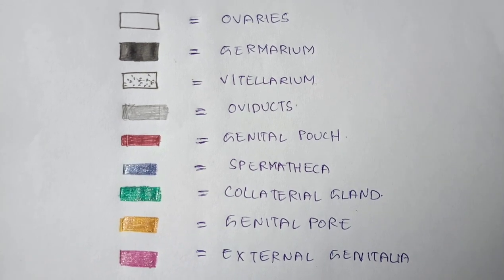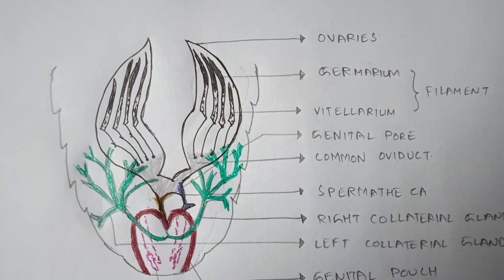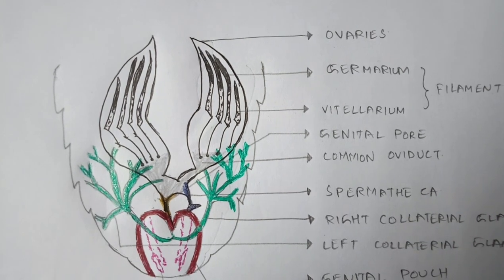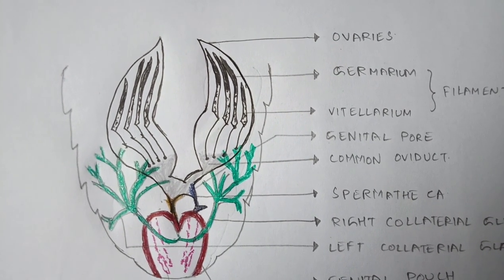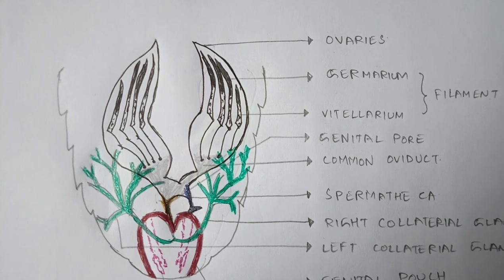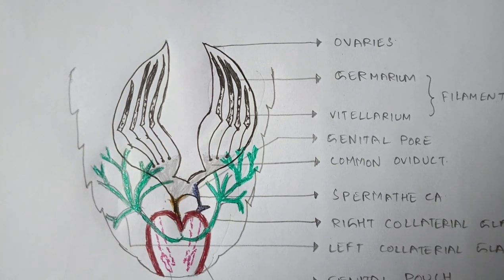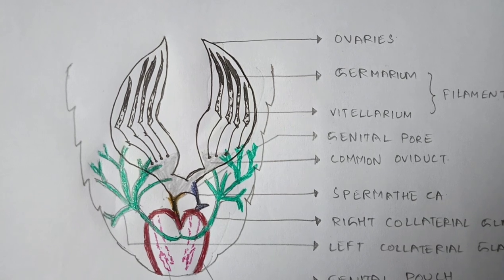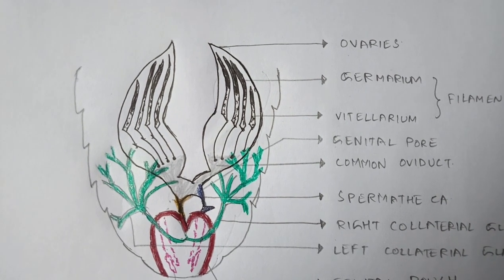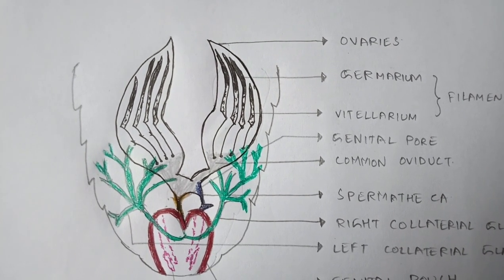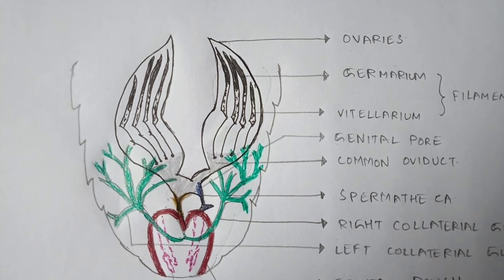First, the ovaries — represented by the black border line. There are a pair of ovaries present in the reproductive system. These ovaries are present at the second to sixth abdominal segments. Cockroach consists of thoracic segments and abdominal segments, and this reproductive system covers the second to sixth abdominal segments.